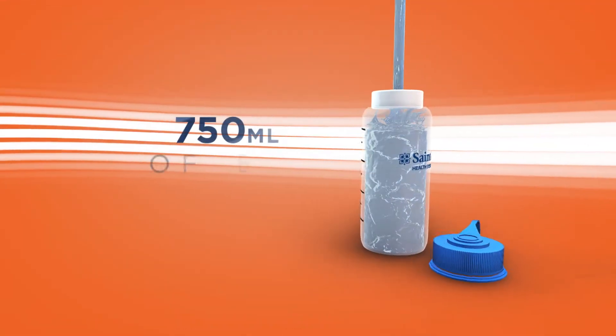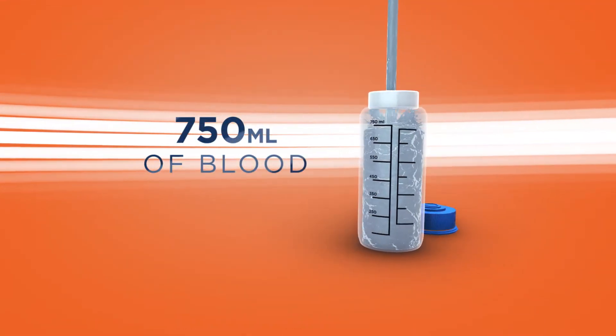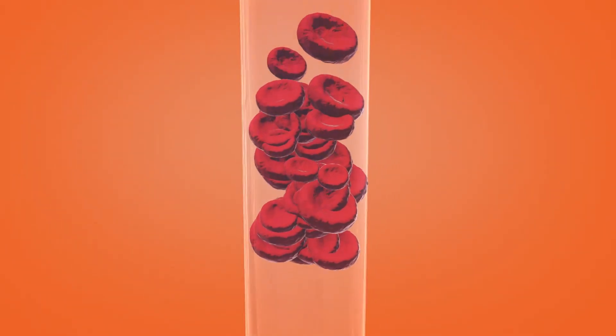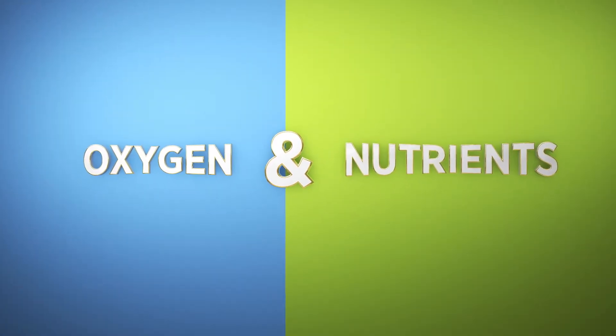Every minute, 750 milliliters of blood flows through your brain. But during a stroke, a clot stops that flow, cutting off vital oxygen and nutrients.